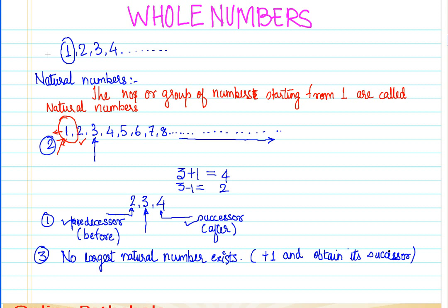To summarize what we discussed: natural numbers start from one and they continue till infinity. All natural numbers have a predecessor and a successor, except one which doesn't have a predecessor. And it is not possible for us to find a largest natural number, because we can always add one to any number.